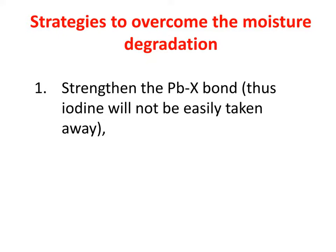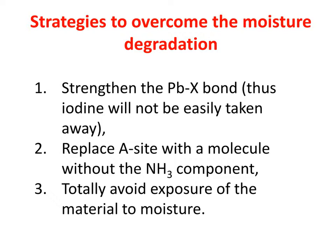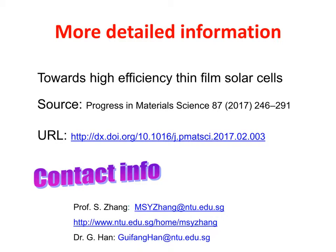Strategies to overcome moisture degradation are as follows. First, strengthen the PbX bond, so that iodine will not be easily taken away. Second, replace the A-site with a molecule without an NH3 group. And third, totally avoid exposure of the material to moisture.